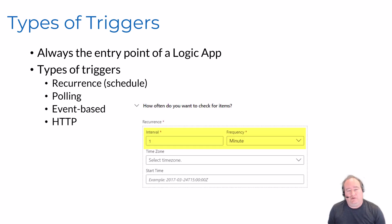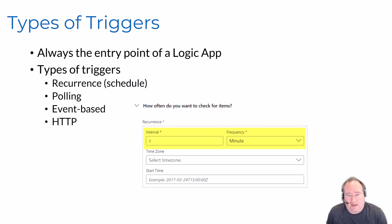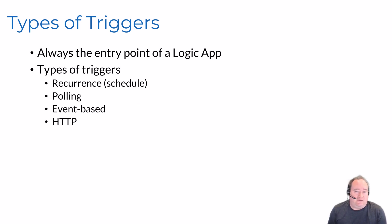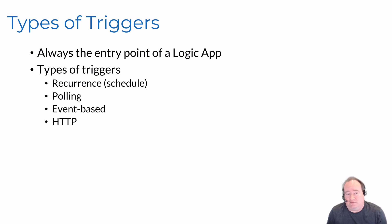Most polling triggers have the ability to adjust the polling interval. Keep that in mind especially if you're using consumption edition, because you are charged for each time that trigger executes. So if you set it for five seconds there could be different cost implications as compared to setting it to five minutes, for example.